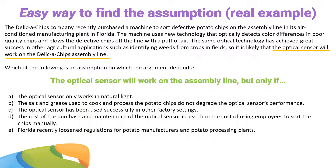Let's take a look at our answer choices. The optical sensor will work on the assembly line, but only if... Answer A: the optical sensor only works in natural light. A is definitely out — the assembly line is inside, so if the sensor only works in natural light, it won't work on the assembly line. We're looking for something that tells us it will work. Answer B: the salt and grease used to cook and process the potato chips do not degrade the optical sensor's performance. B is possible. The only way this optical sensor is going to work is if the salt and grease in the factory doesn't interfere with the sensor — B simply has to be true for the sensor to work. We'll keep B around as a strong contender.